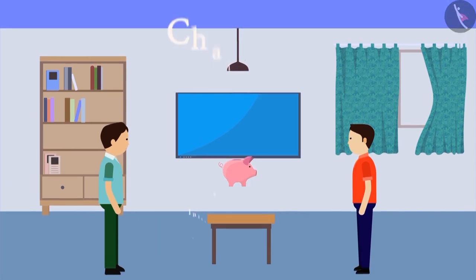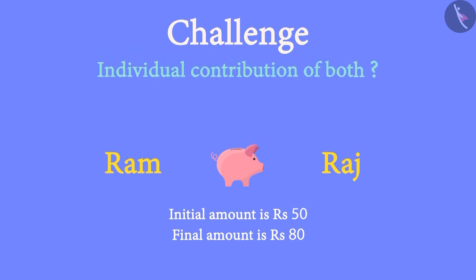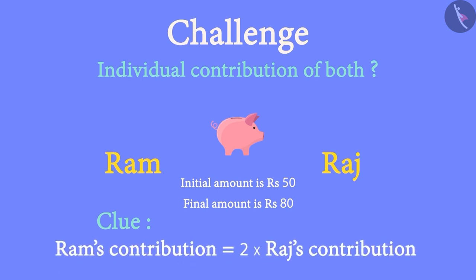Now, there is a challenge for you. Can you tell how much money each friend contributed? But wait! A clue has been given for this. The clue tells that Ram has deposited double the amount deposited by Raj in the piggy bank. Can you find the answer with the help of this clue?